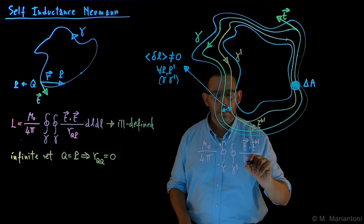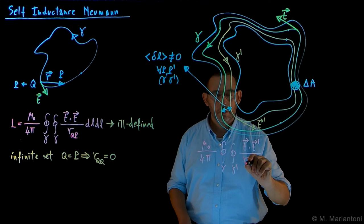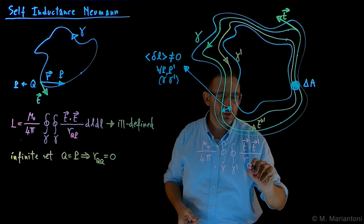Divided by r, p and p prime. You can also call them qq prime if you want. Because actually, for sources, it's better to call it qq prime. dL, dL prime.